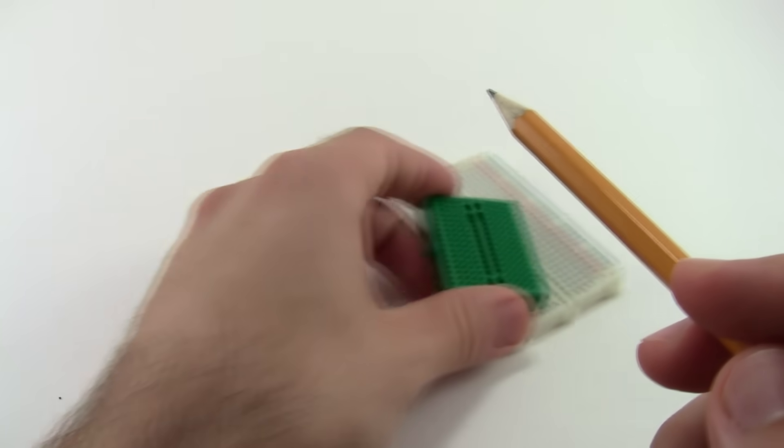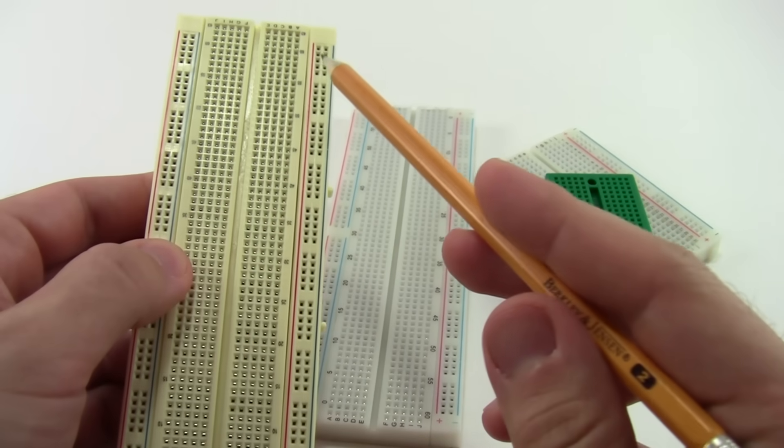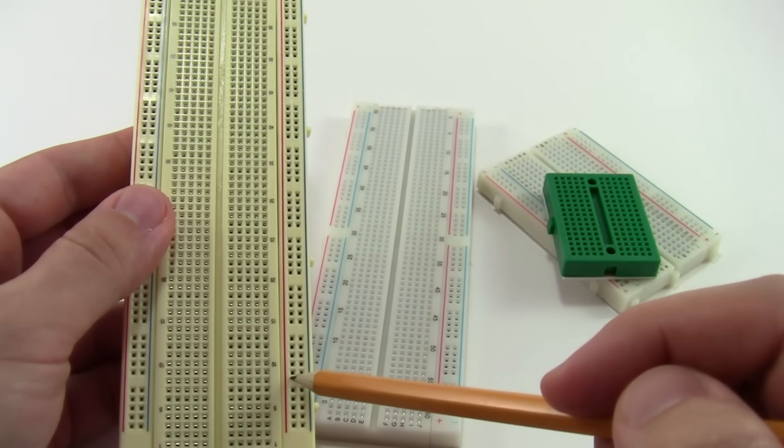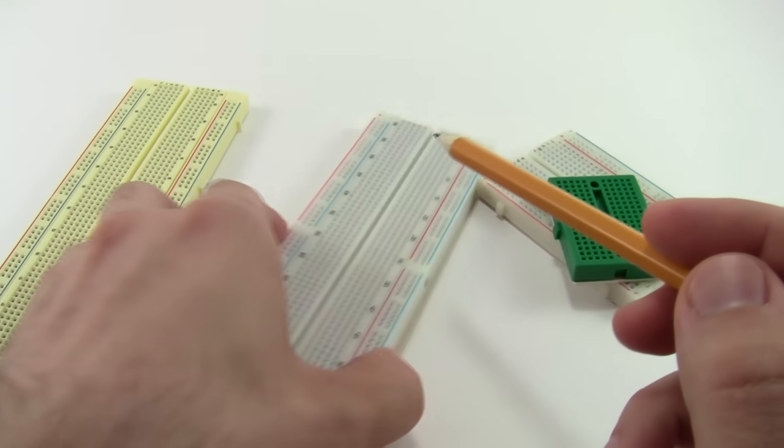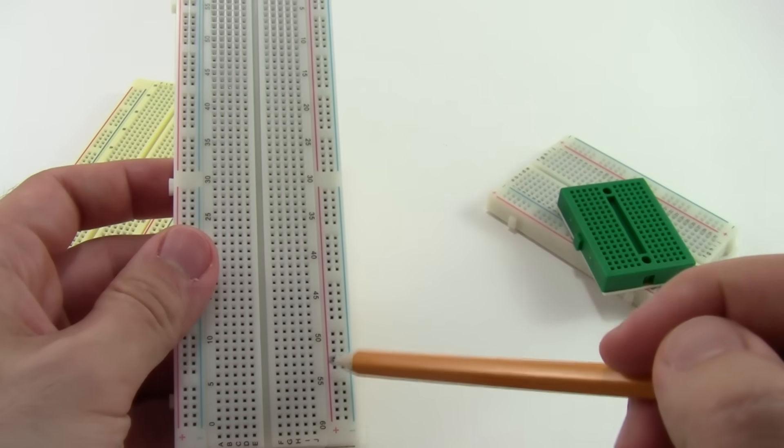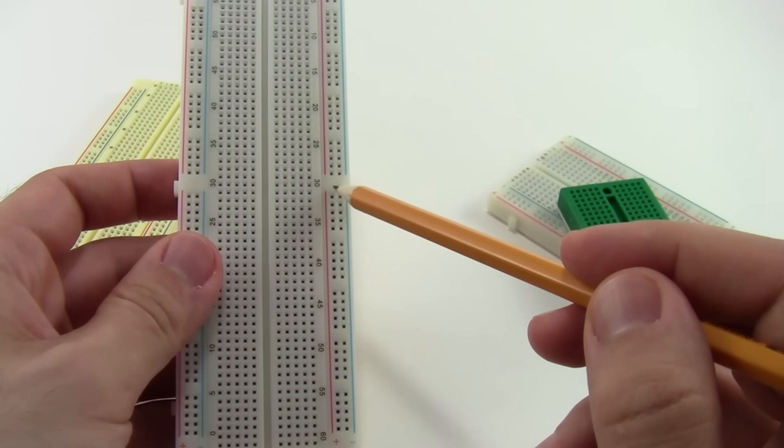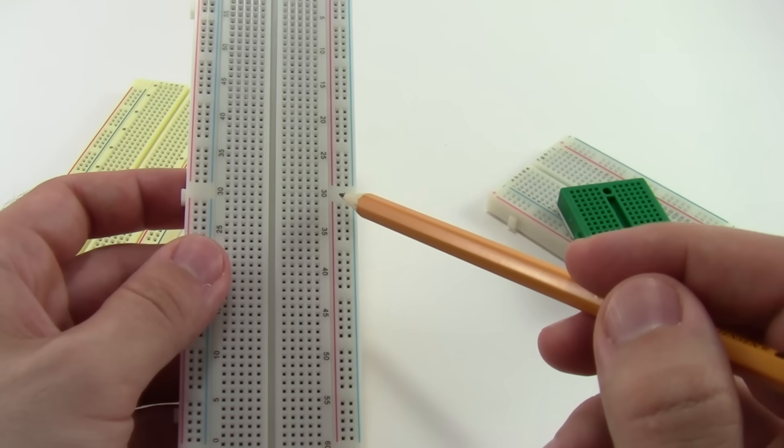Some breadboards, like this mini one, do not have power buses at all. Some full-size breadboards have power buses that run the entire length of the breadboard, as indicated by the continuous unbroken red and black lines. Other ones have power buses that only run half the length of the breadboard, as indicated by the break in the lines here. This is convenient if you have a circuit that needs to be powered by two different voltage levels.